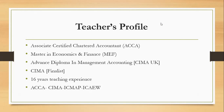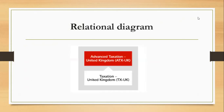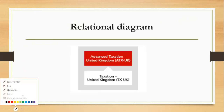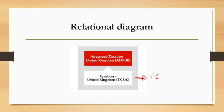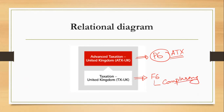Let's talk about the subject Advanced Taxation. This subject is basically related to the basic course of ACCA that was Taxation, previously known as F6. For P6, that is Advanced Taxation, we have a prerequisite paper that is F6. F6 is a compulsory paper — every student has to opt for it — but P6 is an optional paper, so some students opt for this paper and some do not.